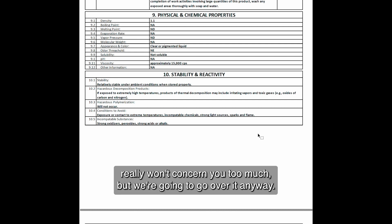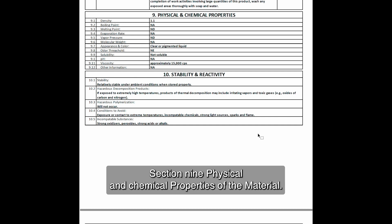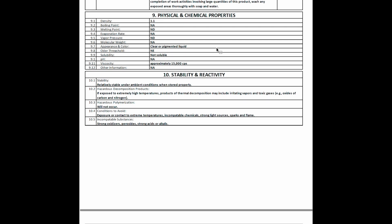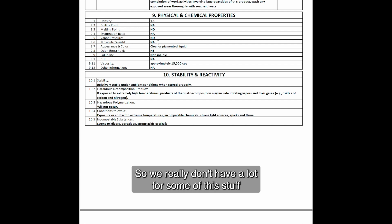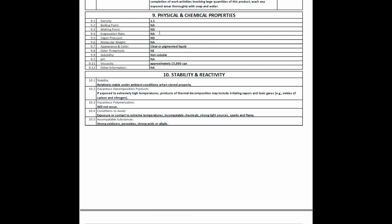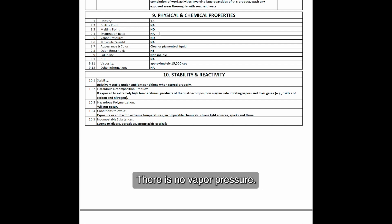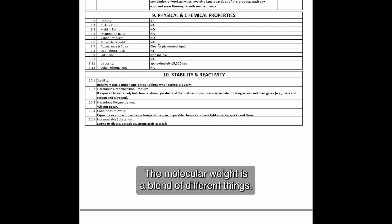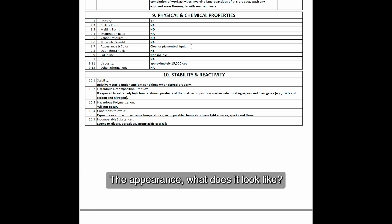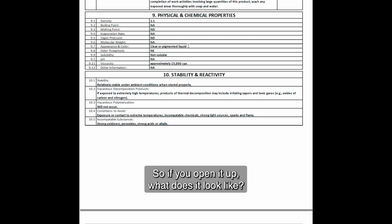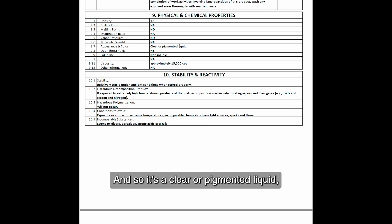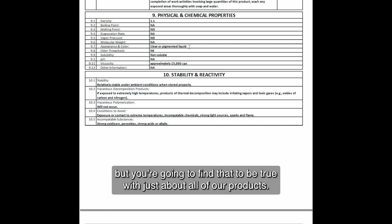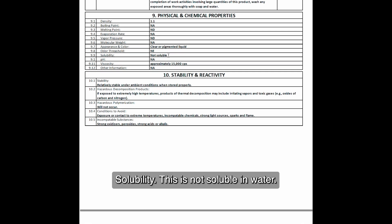Most of this really won't concern you too much, but we're going to go over it anyway. Section nine covers physical and chemical properties of the material. It's pretty general — we have density, boiling point, and molecular weight. It's a mixture, so we don't have a lot for some of this because it doesn't evaporate, there is no vapor pressure, and the molecular weight is a blend of different things. The appearance describes what it looks like and smells like — it's a clear or pigmented liquid.